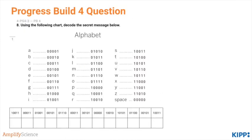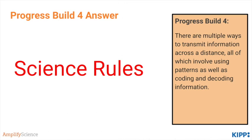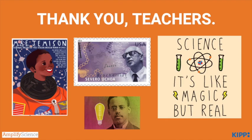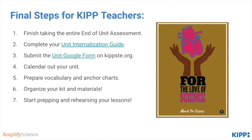Finally, the last question assesses progress build four, testing students' ability to understand what it means to decode something. The answer is 'Science rules' — should have known that! This assesses progress build four. If you haven't already, go ahead and complete the rest of the end of unit assessment to get a feel for how each concept is being fully assessed. Thank you for taking the time to be as prepared as possible to teach this unit. Here are some additional steps you should take to get fully ready. Thanks again.